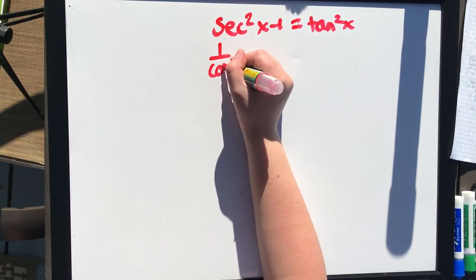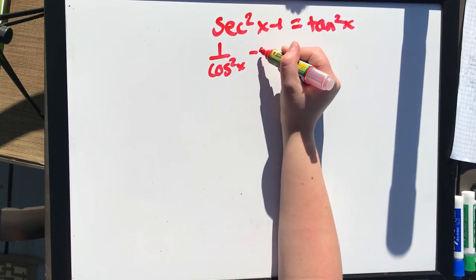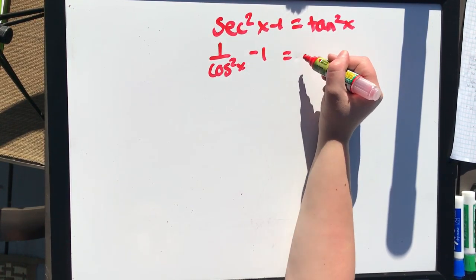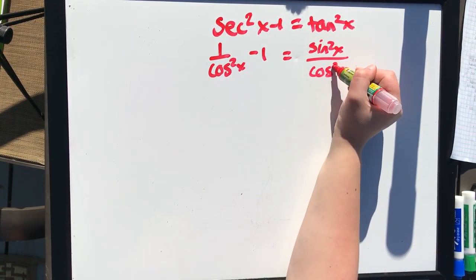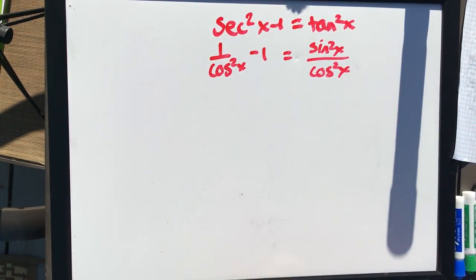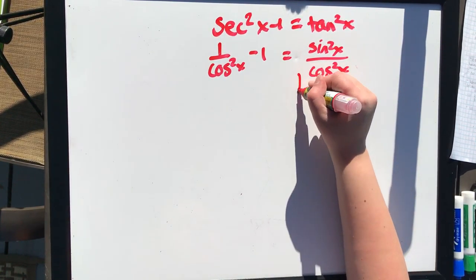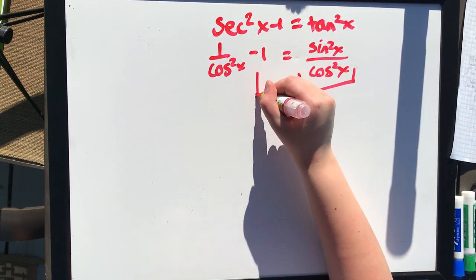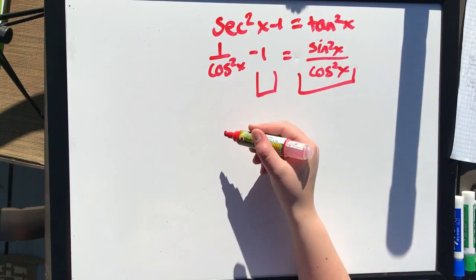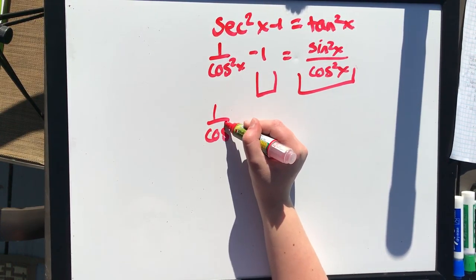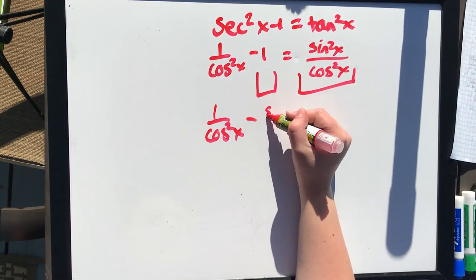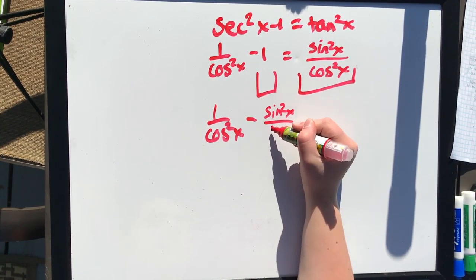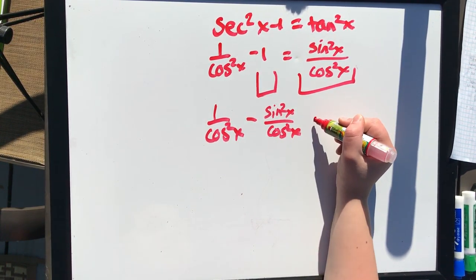So we get 1 over cosine squared x minus 1 equals sine squared x over cosine squared x.